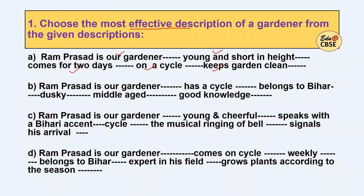Option B: Ram Prasad is our gardener, has a cycle, belongs to Bihar, dusky, middle-aged, good knowledge — these also seem okay. Option C: Ram Prasad is our gardener, young and cheerful, speaks with a Bihari accent, cycle, and the musical ringing of the bell signals his arrival — this option gives us many descriptive details. Option D: Ram Prasad is our gardener, comes on cycle weekly, belongs to Bihar, expert in his field, grows plants according to the season.